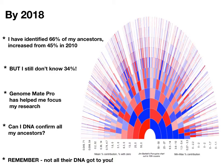I've now identified 66% of my ancestors, but I still don't know another 34% — a staggering amount, over a third. So a lot of those matches that I don't know how they're matching me could actually be matching to some of those ancestors. Genomate Pro has helped me to focus my research and to also think about matches of my cousins, not just my own matches.